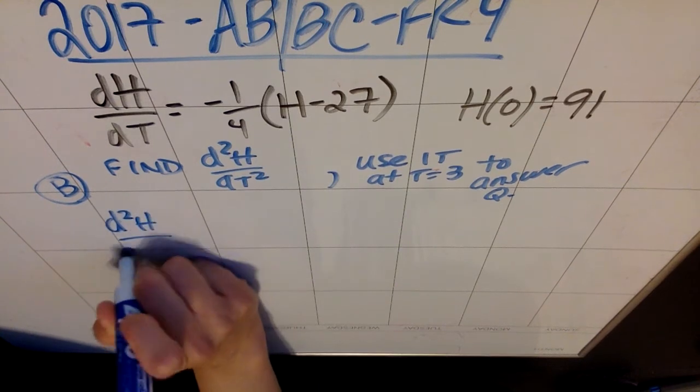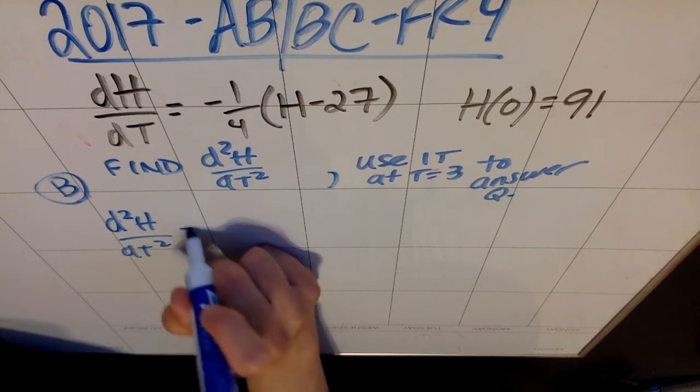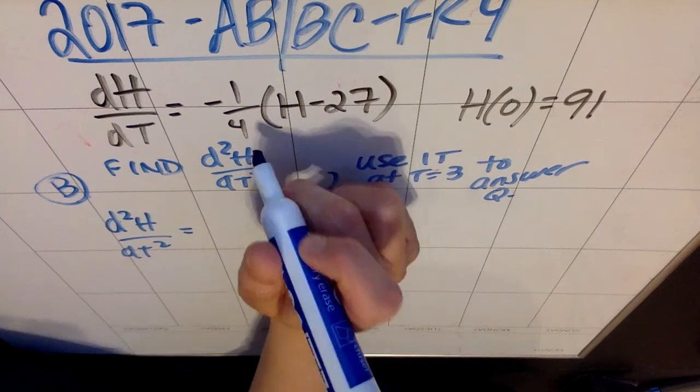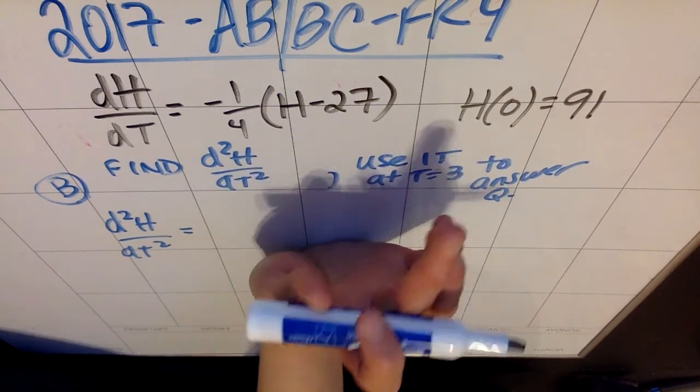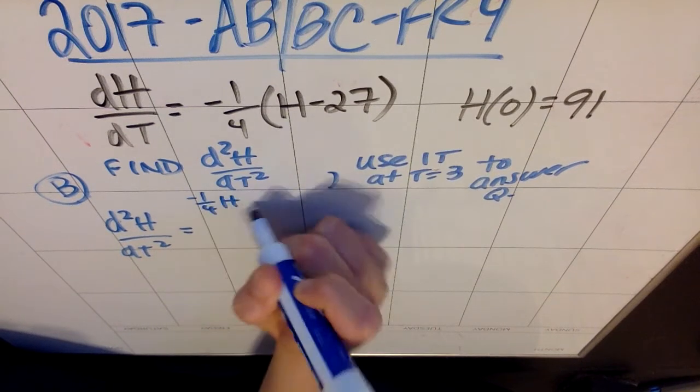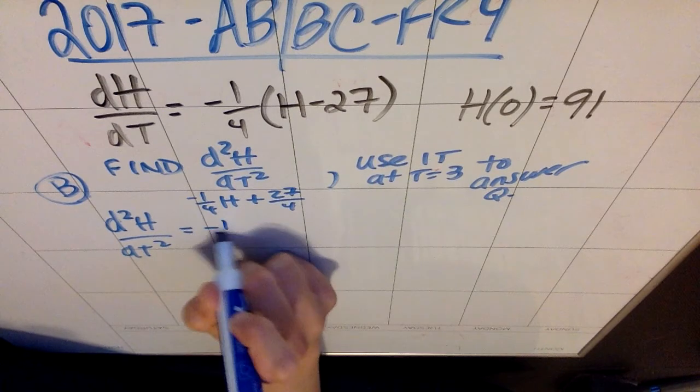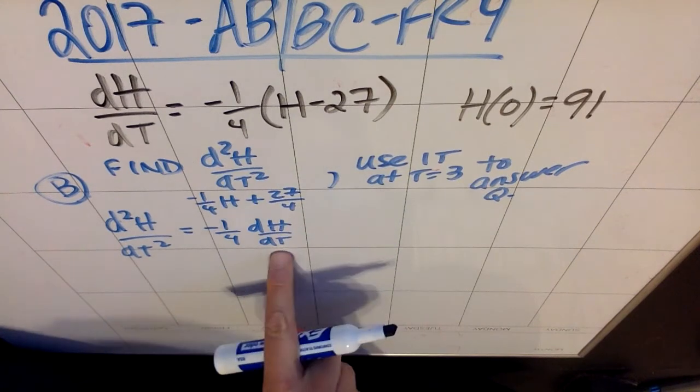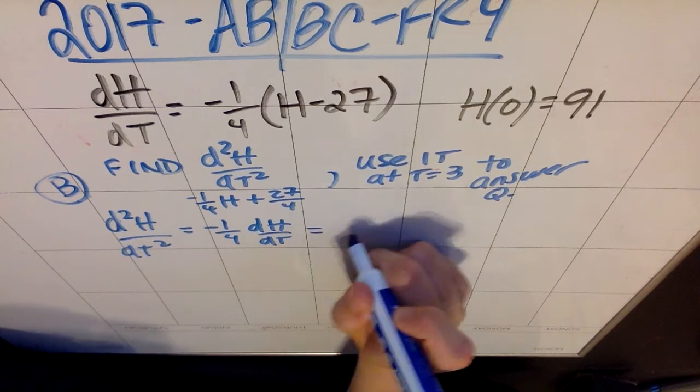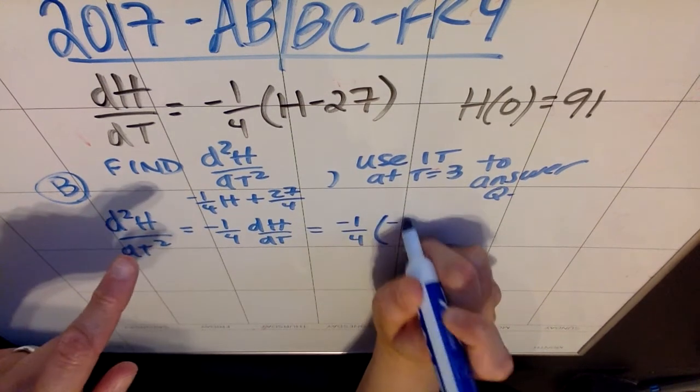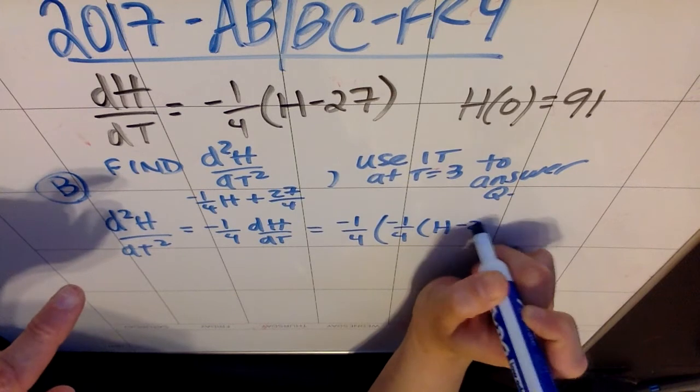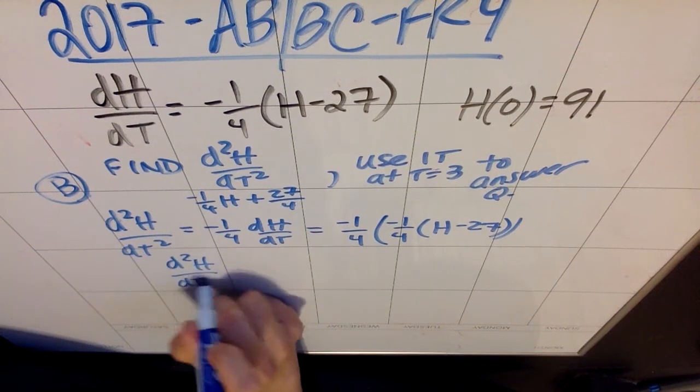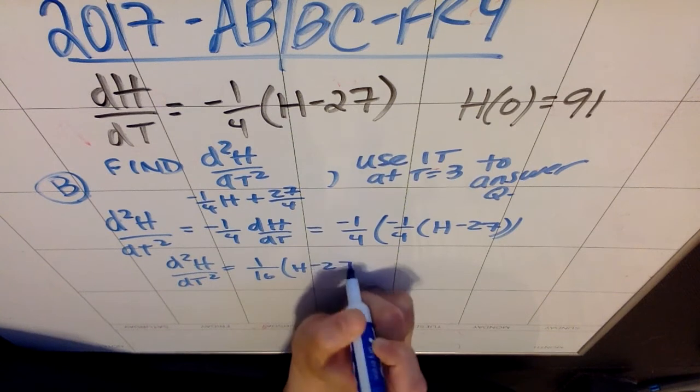d²H/dt² equals, if you want to distribute this, you can make this negative 1/4 H plus 27/4. When you derive it, you're going to end up with negative 1/4 dH/dt, and then this guy goes away. This is the important piece of information. People forget the dH/dt. So that is negative 1/4 times the thing that was my original dH/dt. I end up getting that d²H/dt² is 1/16 times (H minus 27).